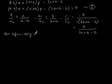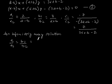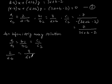Now, we know that for infinitely many solutions, A1 by A2 is equal to B1 by B2 is equal to C1 by C2. So putting in the values, we get 2 by (A minus B) is equal to 3 by (A plus B) is equal to 7 by (3A plus B minus 2).